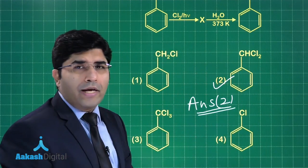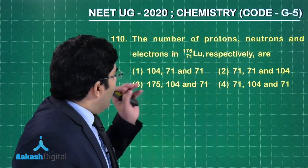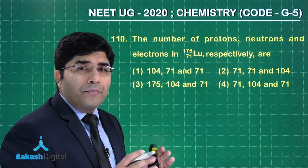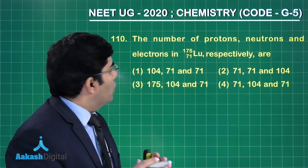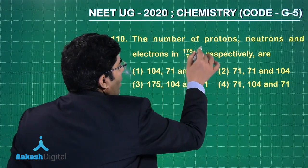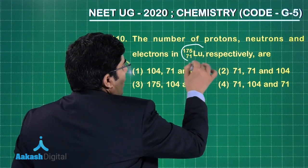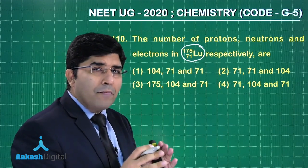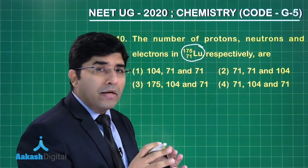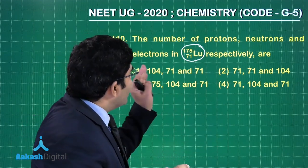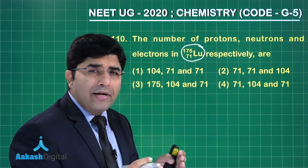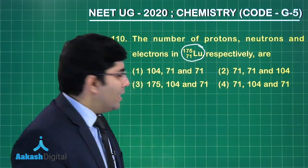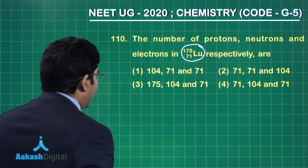Moving on to the next question: this one is from the chapter Structure of Atom. An element lutetium is given with atomic number 71 and mass number 175, and we have to find the number of protons, neutrons, and electrons.